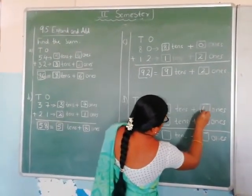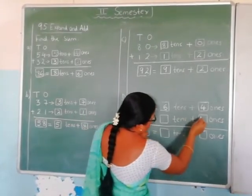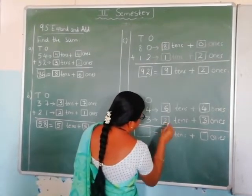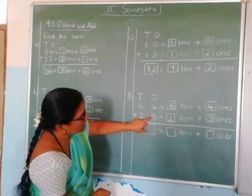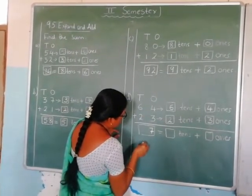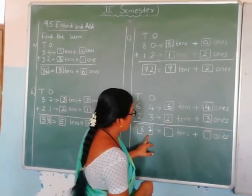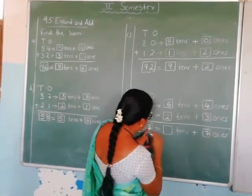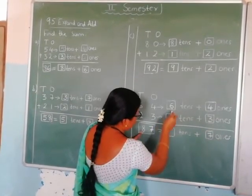Now 2 is in the ones place — write 2 here. And 2 is in the tens place — write 2 here. Now let us add. 4 plus 3 is how much? 4 plus 3 is 7 — write 7 here. Now 6 plus 2 is how much? It is 8 — write 8 here. So 7 is in the ones place and 8 is in the tens place. Write 7 in the ones place and 8 in the tens place.